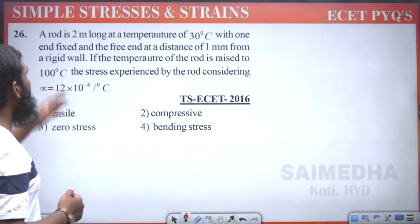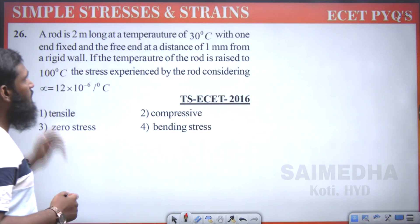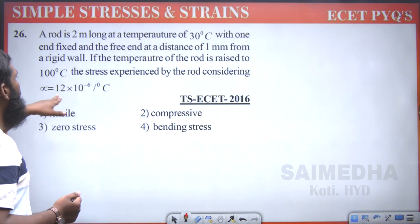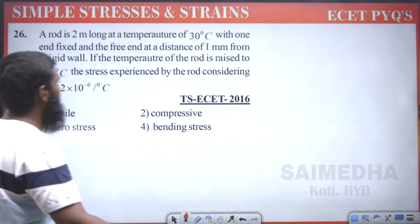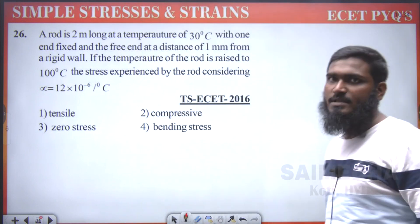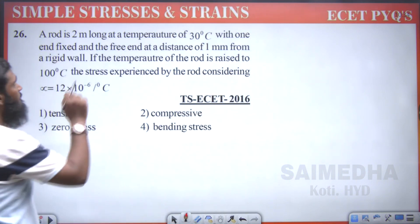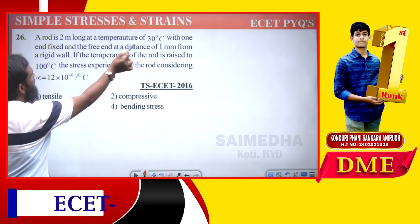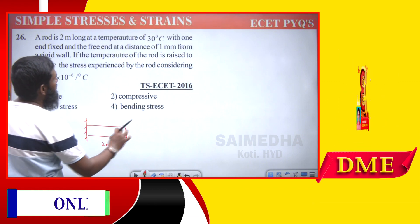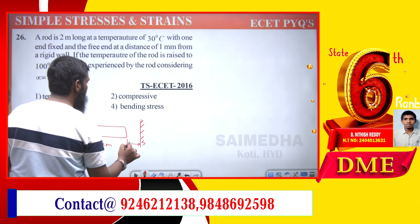A rod is 2 meters long at a temperature of 30°C with one end fixed and a free end at a distance of 1 mm from a rigid wall. If the temperature is raised to 100°C, the stress experienced by the rod — given alpha equals 12 × 10⁻⁶ per degree Celsius — is it compressive stress, no stress, tensile stress, or bending stress? First we find the elongation delta L using the formula: delta L = alpha × delta T × L.